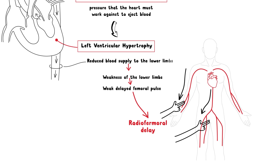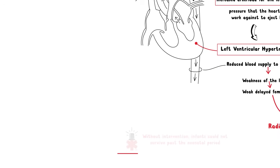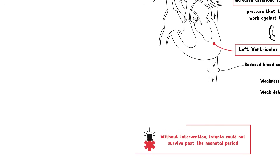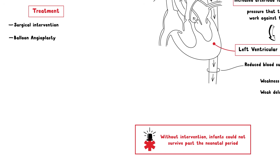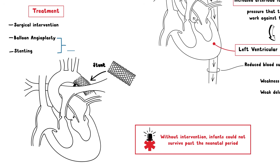Coarctation of the aorta is a very important condition to catch, because without intervention these infants often do not survive past the neonatal period. Treatment depends on the age of diagnosis and the severity of the condition. Common interventions are surgical; however, balloon angioplasty and stenting may be used as first-line.